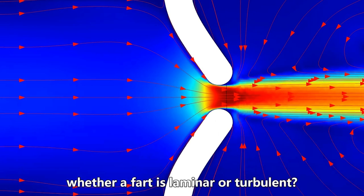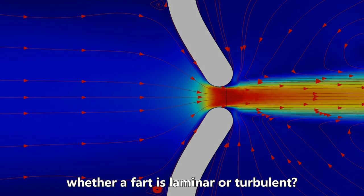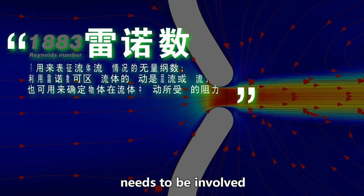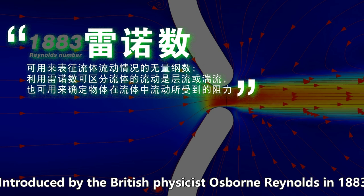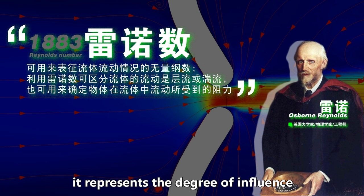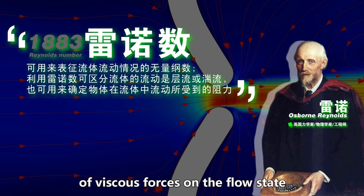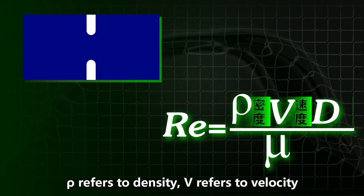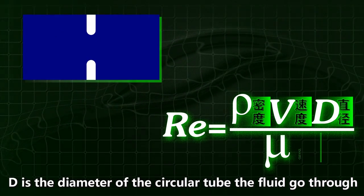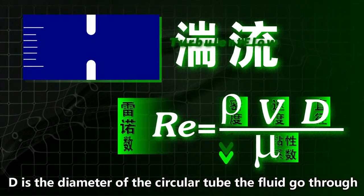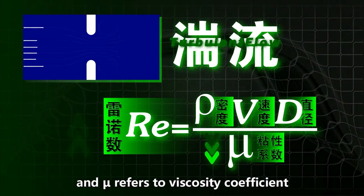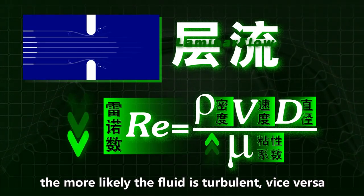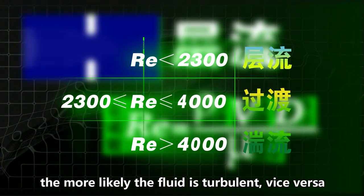How can we determine whether a fart is laminar or turbulent? Reynolds number, an important dimensionless number in fluid mechanics, needs to be involved. Introduced by British physicist Osborne Reynolds in 1883, it represents the relationship between inertia and viscous forces in flow state. Here is the formula: ρ refers to density, V refers to velocity, D is the diameter of a circular tube the flow goes through, and μ refers to viscosity coefficient. The larger Reynolds number, the lower the degree of viscous force influence, the more likely fluid is turbulent.